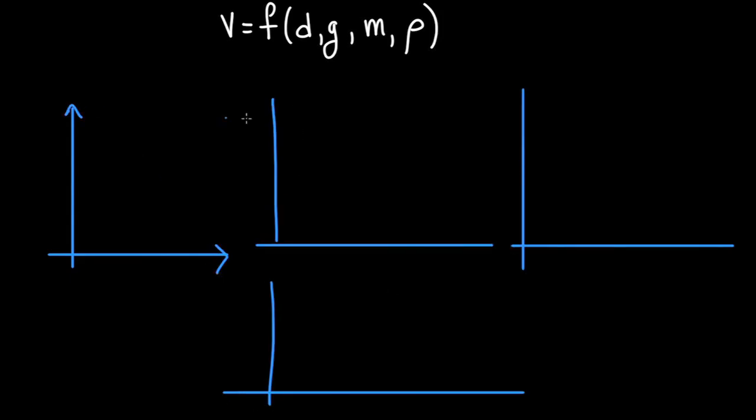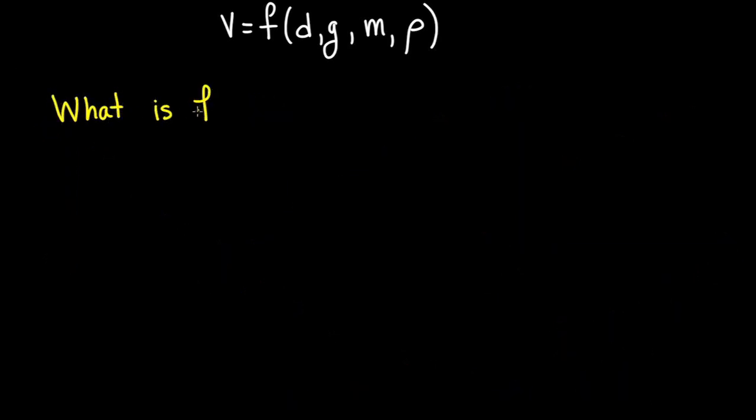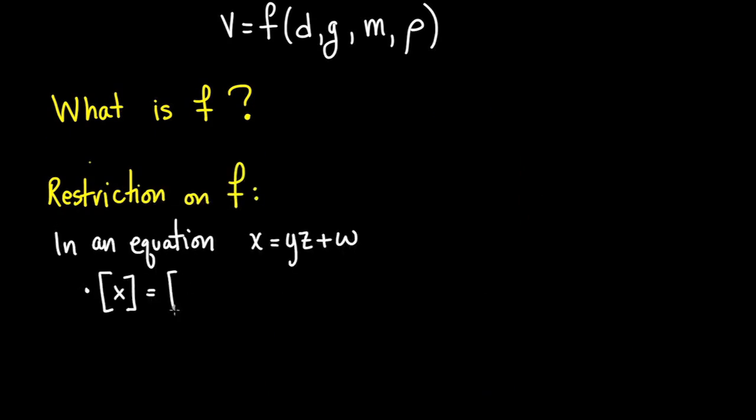Once we have the full list of independent variables, we can express the terminal velocity as some function of these independent variables. In order to find the function that describes the relationship, we need to do several experiments involving four independent variables and fit the data. That's a lot of work, especially because we don't know what the function might look like. But whenever you have an equation, all terms in the equations must have the same dimension. Multiplying two terms multiplies the dimensions. This restricts the possible form that a function describing the terminal velocity, in terms of our four other variables, can take, because the function must combine the variables in some way that has the same dimension as velocity.